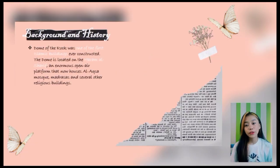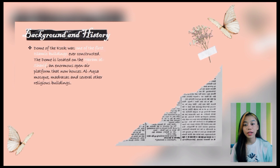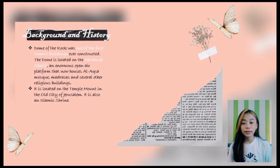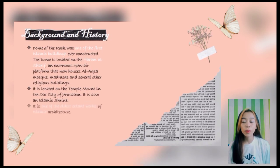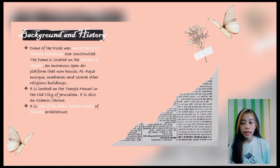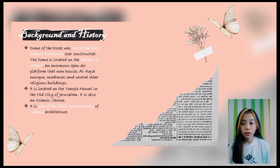The Dome of the Rock was one of the first Islamic buildings ever constructed. It is located on the Temple Mount in the old city of Jerusalem and is also an Islamic shrine. In 70 Common Era, the Dome was destroyed during the Roman siege of Jerusalem. It was originally collapsed in 1015 and was rebuilt in 1022–23. It is one of the oldest extant works of Islamic architecture.